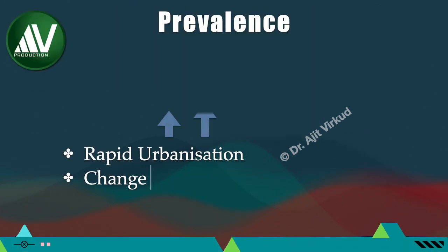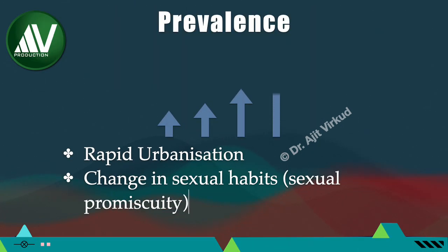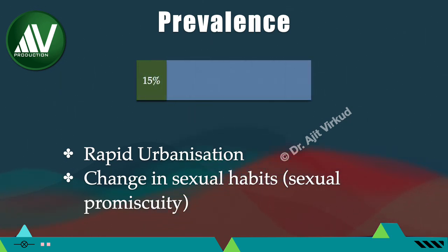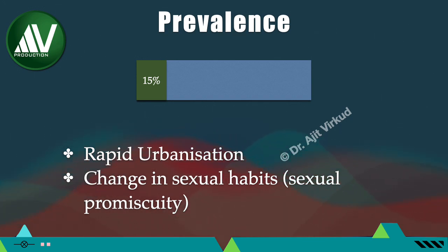Rapid urbanization and change in sexual habits has led to an increasing trend in the incidence of pelvic inflammatory disease. More than 15% of women in the United States have pelvic inflammatory disease by 30 years of age. However, of late, public and professional awareness of genital infections, especially the fear of HIV AIDS, has led to a decline in the prevalence and spread of pelvic inflammatory disease in certain developed countries.